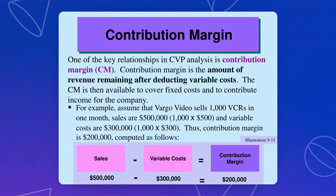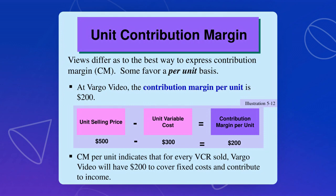One of the key relationships in CVP is your contribution margin. Contribution margin is the amount of revenue remaining after deducting your variable cost. The CM is then available to cover the fixed cost and to contribute to net income. So if volume is 1,000 units, just multiply by selling price — in total terms: 500,000 minus 300,000 gives you 200,000. Also it can be expressed per unit by deducting unit selling price minus variable cost per unit to get the contribution margin per unit.